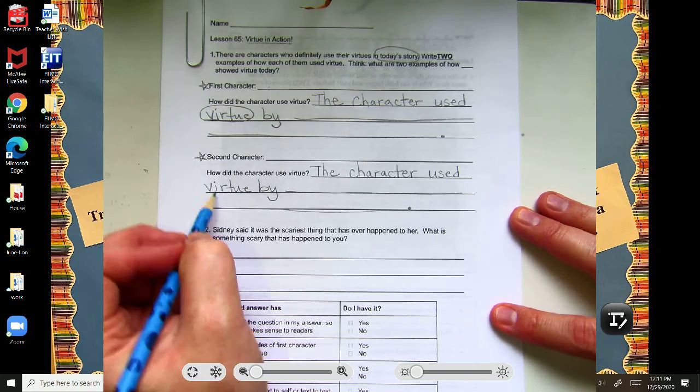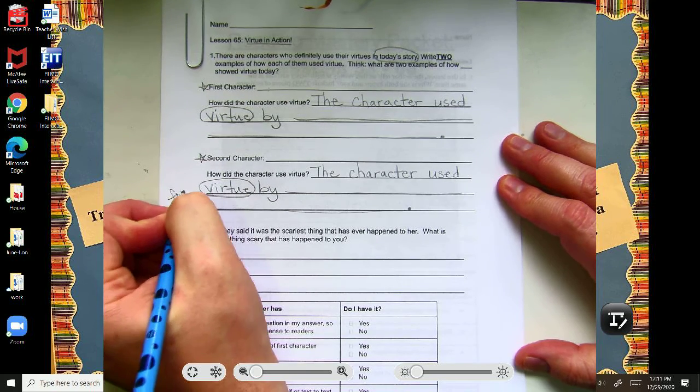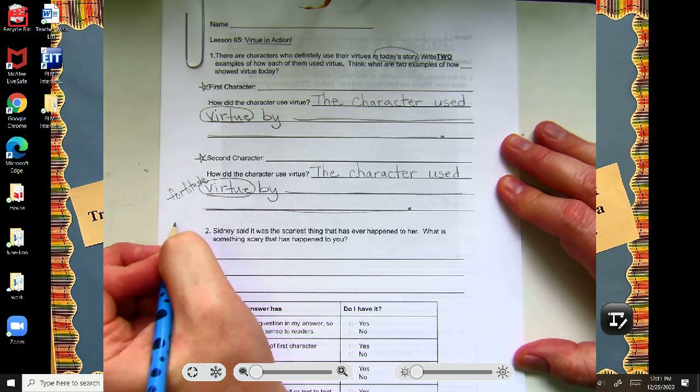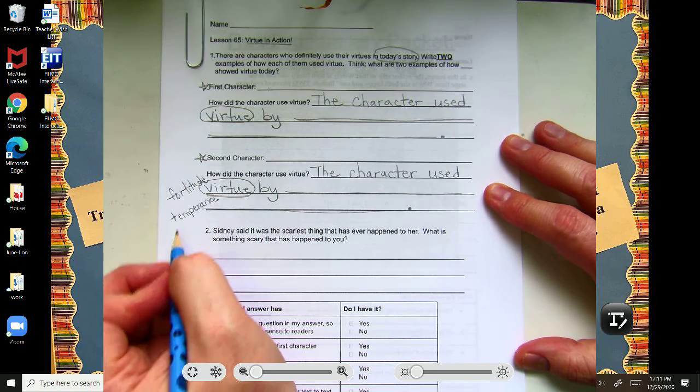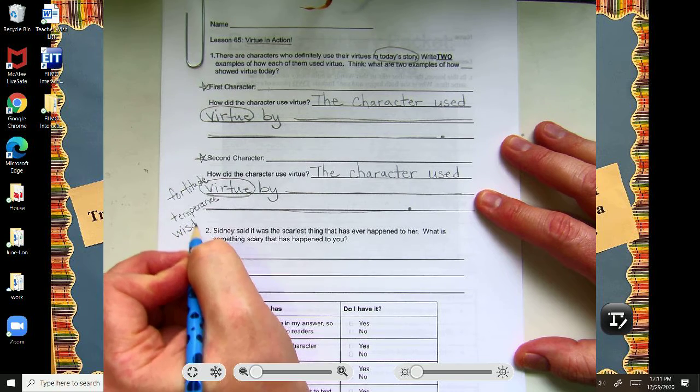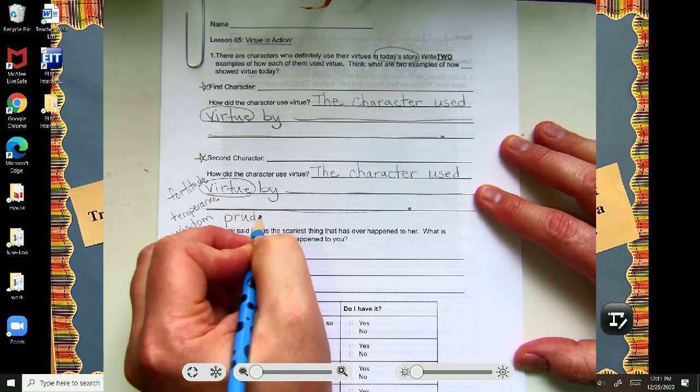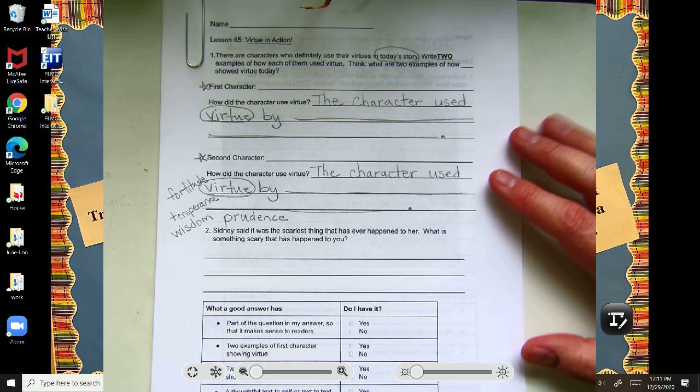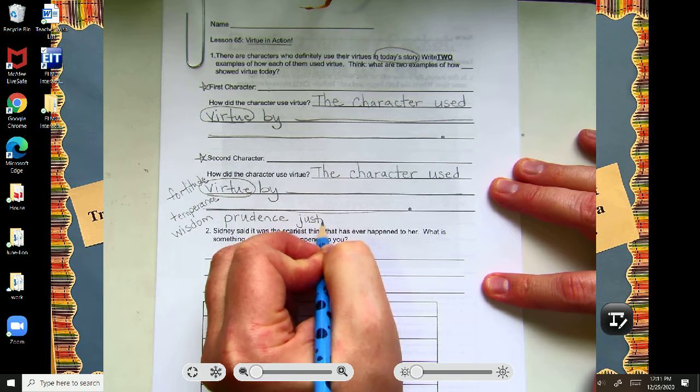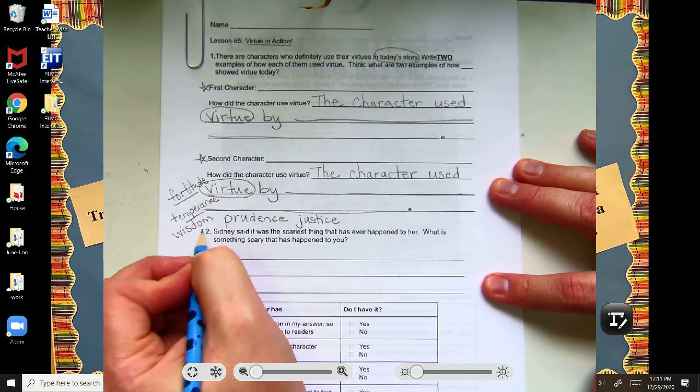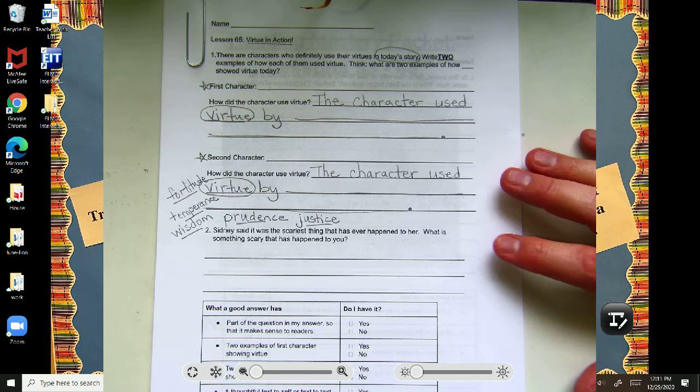So what did that character do that showed virtue? And just like this first part, maybe you want to name the specific virtue, right? Maybe you want to say used fortitude, or used temperance, right? So if you wanted to specifically use one of the virtues, you certainly could do that, in place of virtue, in place of the word virtue, making it a very specific answer.